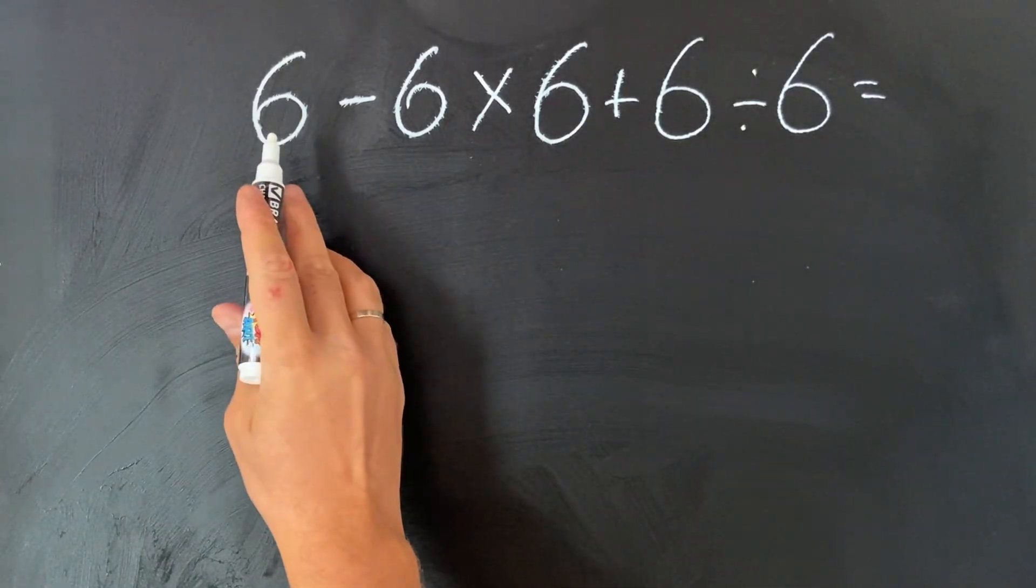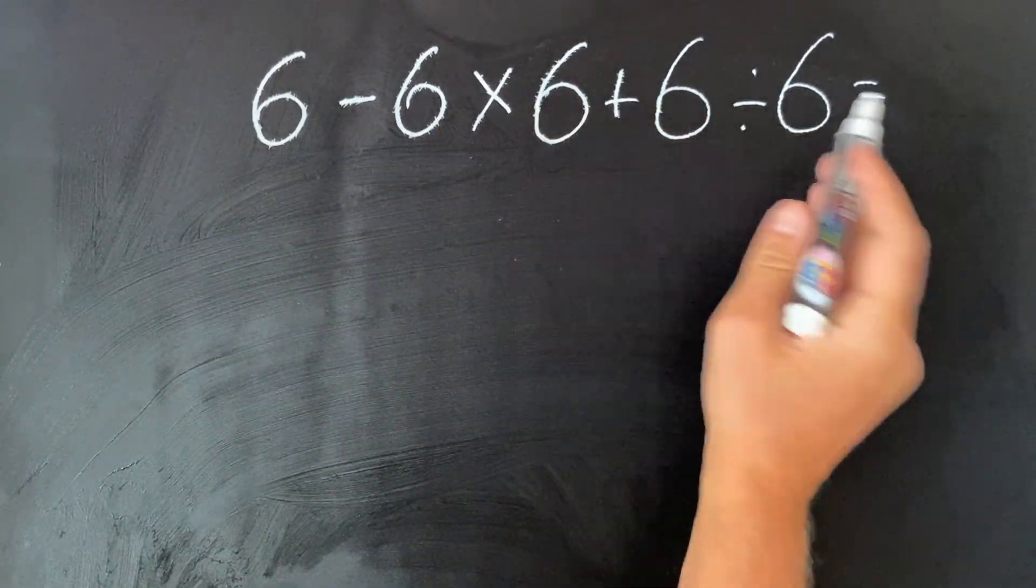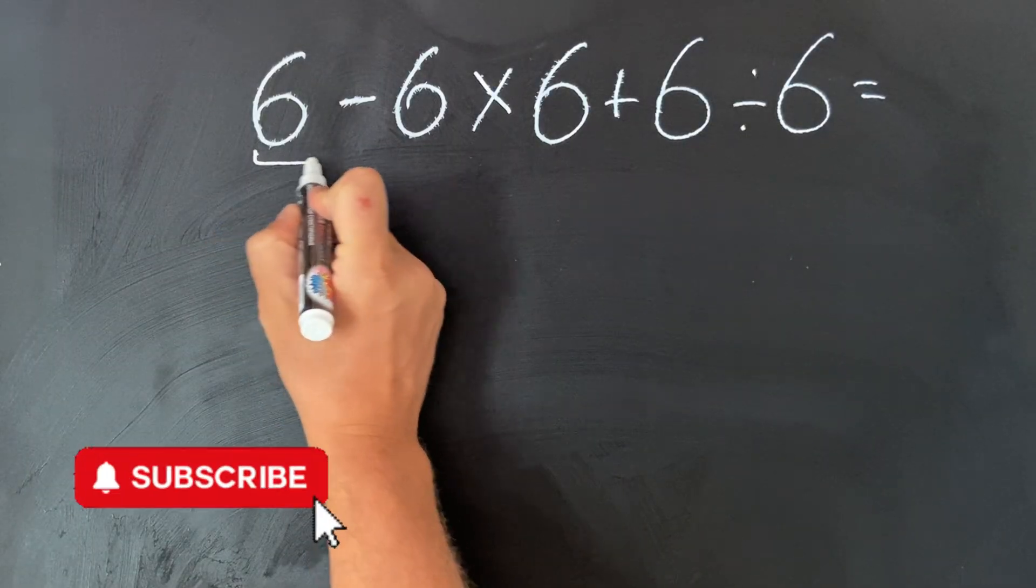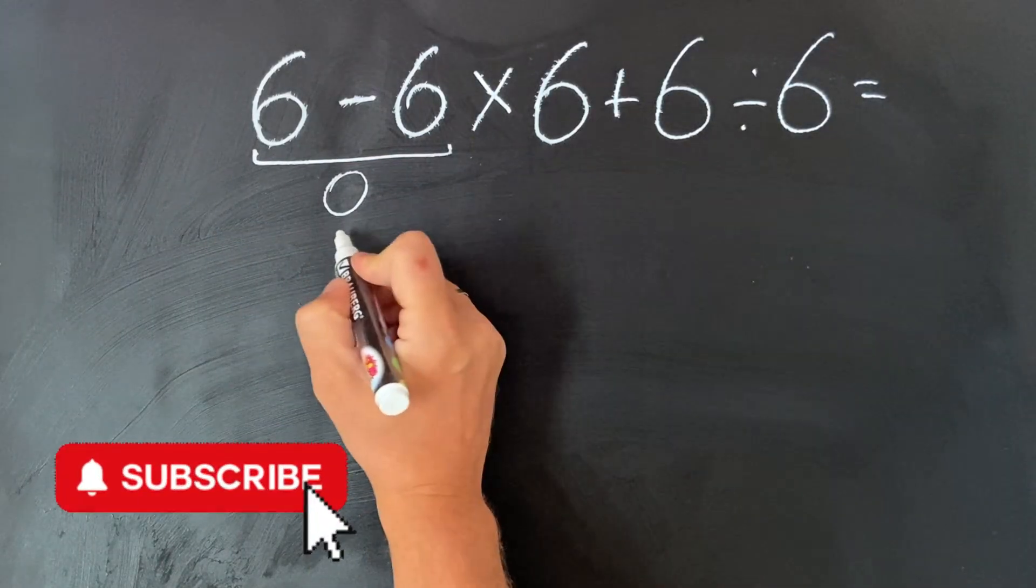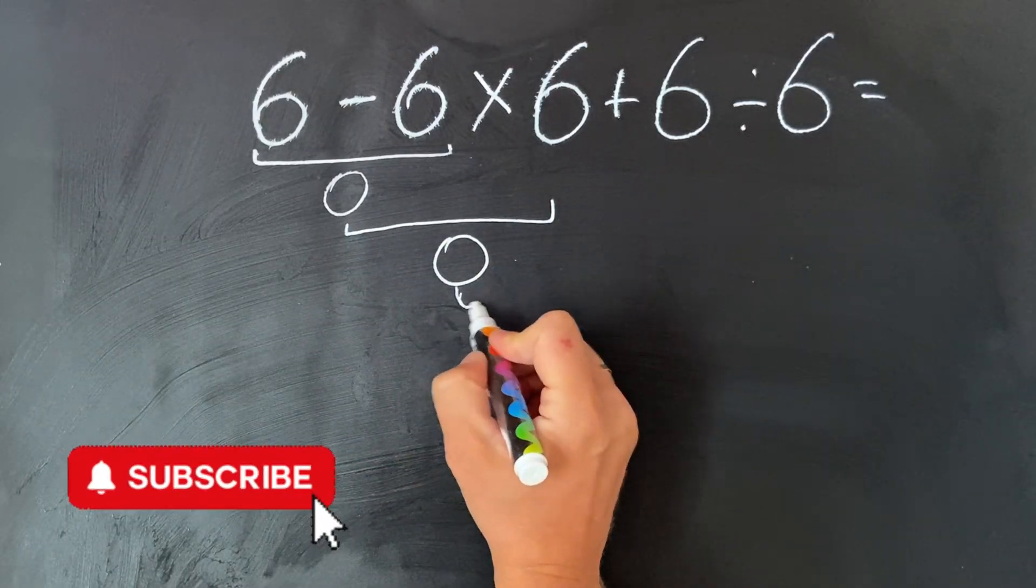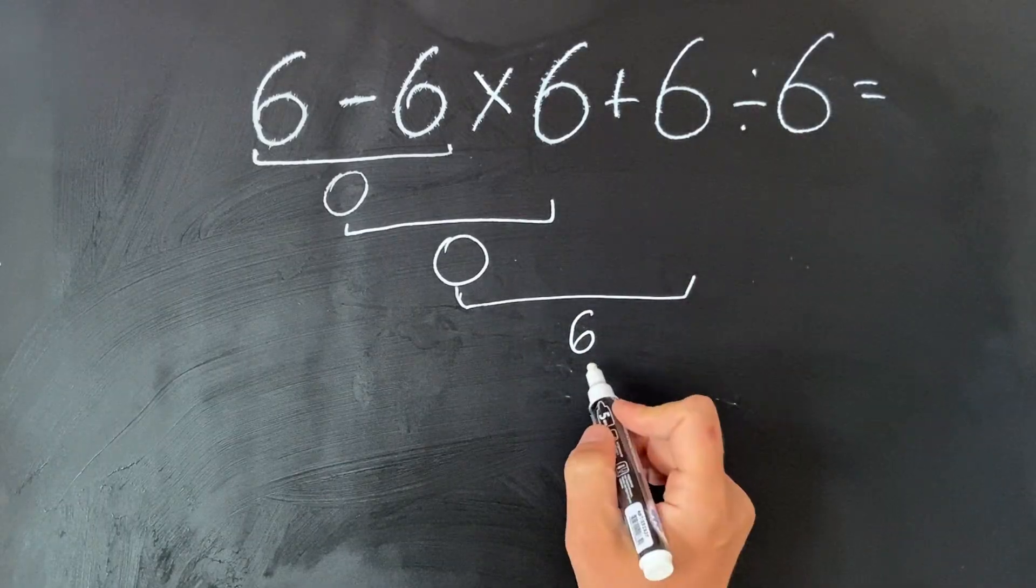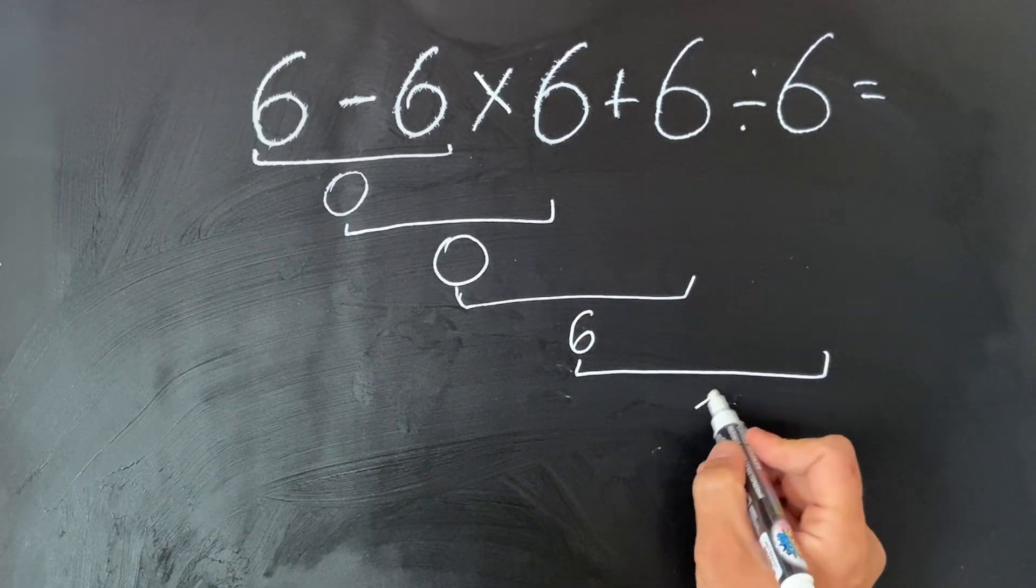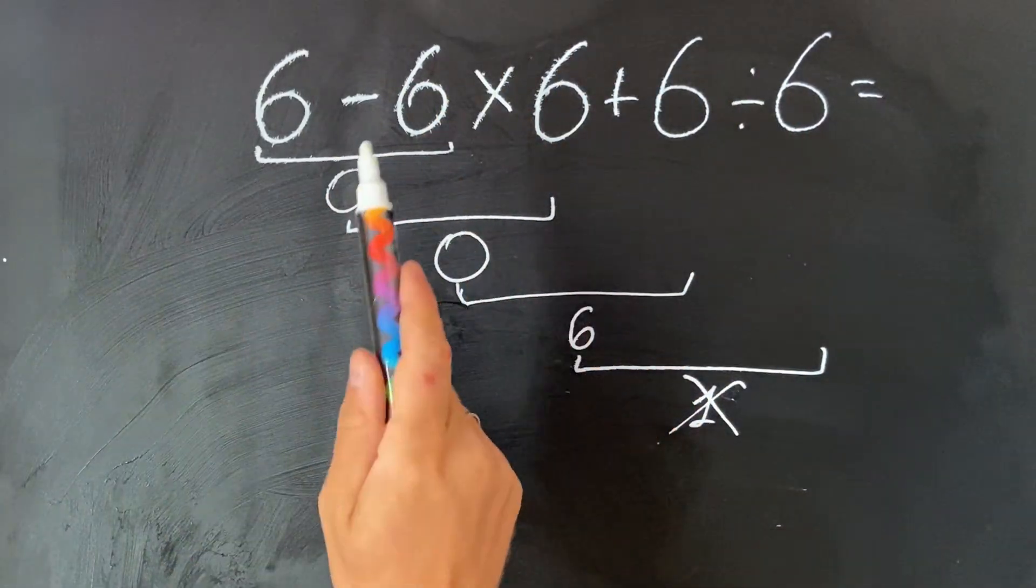Many people solve this equation from left to right without paying attention to the order of operation. So what they do: they get 6 minus 6 is 0, multiplied by 6 they got 0 again, plus 6 so they got 6, and 6 divided by 6 equals 1. But this is an incorrect approach because you should